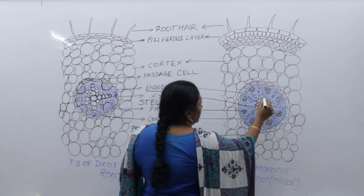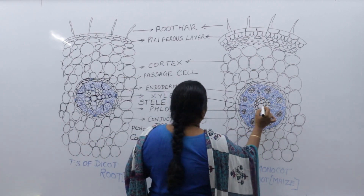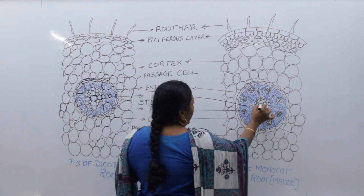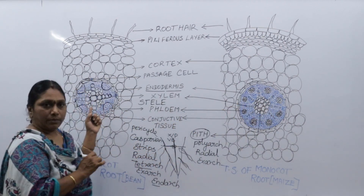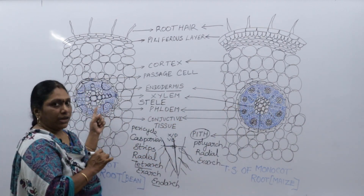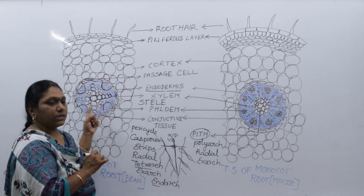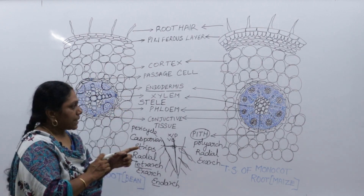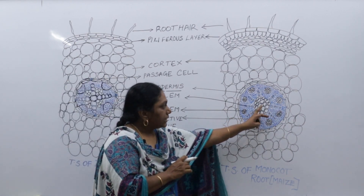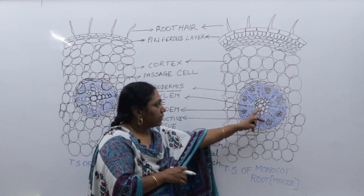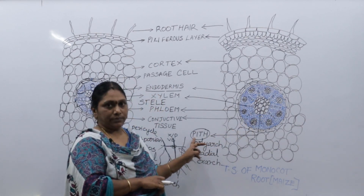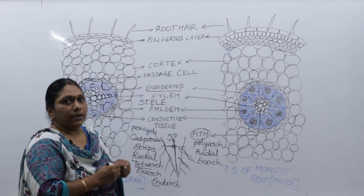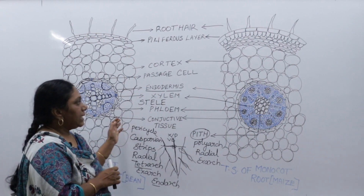The center part of the monocot root is called as pith. In dicot root, pith is present in young roots but absent in older roots. In monocot root, the center part is well-developed pith. This is another key difference between dicot and monocot root.